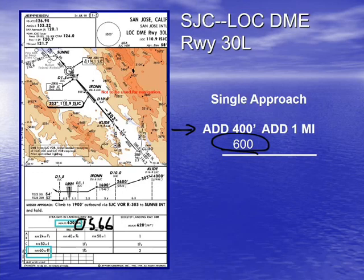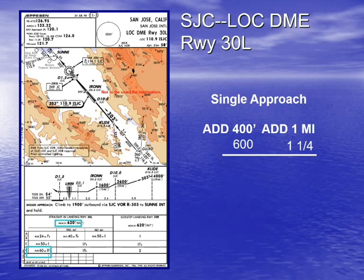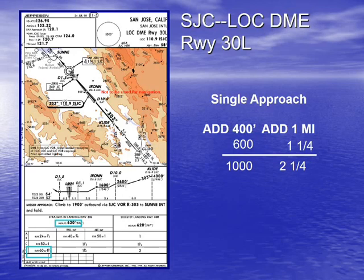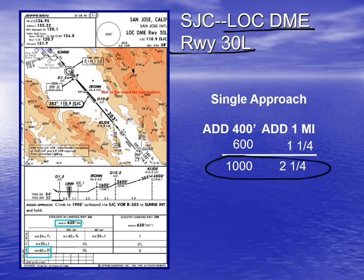We add one mile to our mile-and-a-quarter visibility. That mile-and-a-quarter visibility applies to our Category D aircraft, and one mile comes from the derived alternate minimums table we looked at before. When we add these things together, we now have an alternate minimum for San Jose, California: using only the localizer DME and runway 30L, our alternate minimum is 1,000-foot ceiling and two-and-a-quarter miles visibility for when we are supposed to be arriving at that alternate.